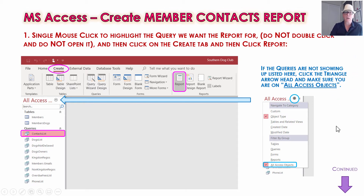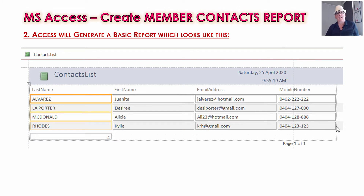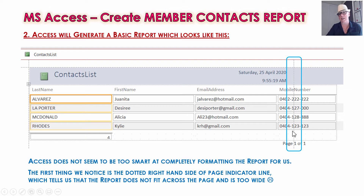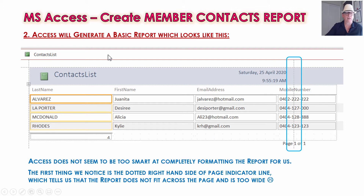Go to Create Report. When you do that, Access will generate the basic report for you. It's not great, but it's a start and a lot of the work's done for us. We've got the person's last name, their first name, all the information out of the query. This dotted dashed line shows you where your page ends, and the mobile phone number is kind of spilling off the end of the page, so that wouldn't print out too well.